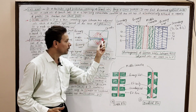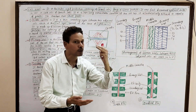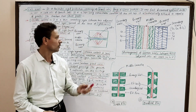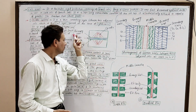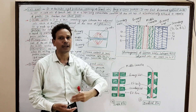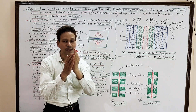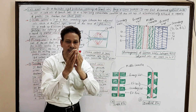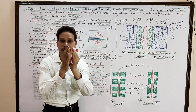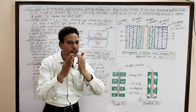This middle lamella develops at the time of cytokinesis of cell division. It is the first formed layer that develops during cytokinesis in the form of a cell plate. That cell plate grows outwardly, centrifugally.